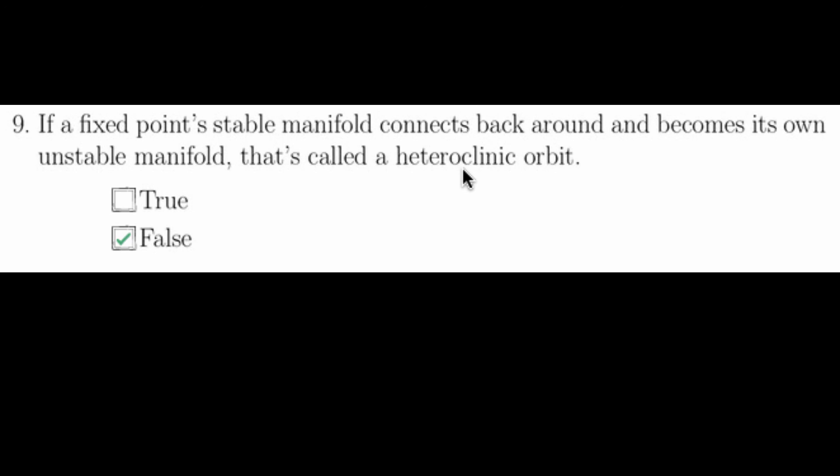A good way to remember this is to look at the prefix hetero. A word with the prefix hetero means other or different. So in this case, this is a path that connects two different fixed points. In the case of homoclinic, you have the prefix of homo, which means same. In a homoclinic orbit, you're attaching the stable manifold back to its own unstable manifold. Keeping in mind the meaning of hetero versus homo in this circumstance can be quite helpful.